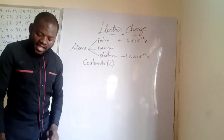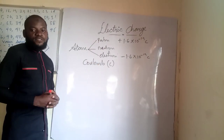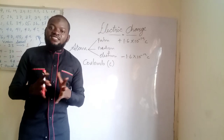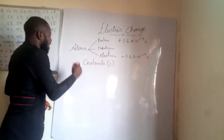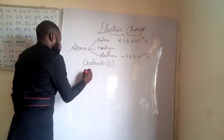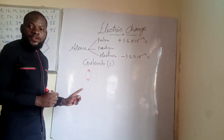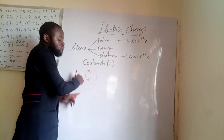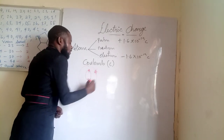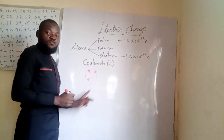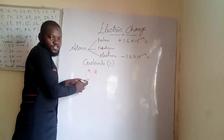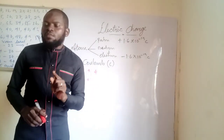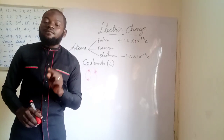Now let's look at where these three particles are positioned. Before we go on, what is the nucleus? The nucleus is the dense mass of an atom. If we have an atomic structure, the nucleus is that central region, and it is made up of the proton and the neutron. Around the nucleus, there is an orbit on which the electron revolves. The electron can freely move, while proton and neutron remain at the nucleus.